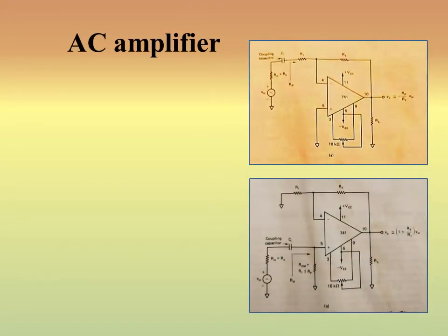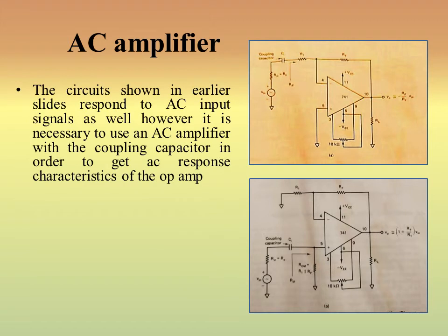Now we will discuss the AC amplifier. The basic diagram shows two configurations — one with the input connected at the inverting end and one with the input at the non-inverting end. These circuits are similar to those shown before, and they respond to AC input signals as well. However, to use it as an AC amplifier, it is required to add a coupling capacitor — the key difference from the previous DC amplifier diagrams.